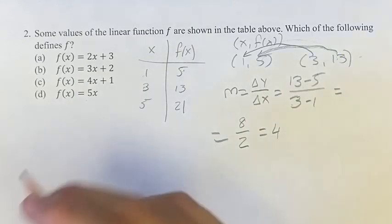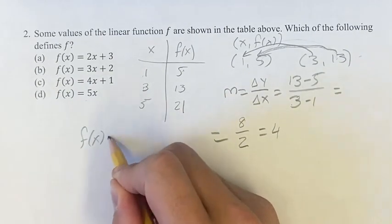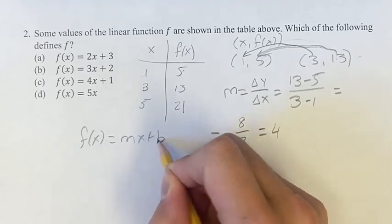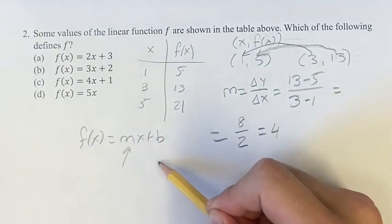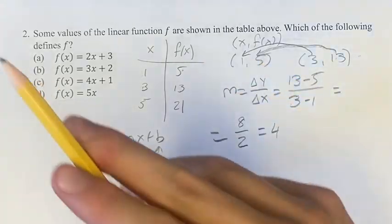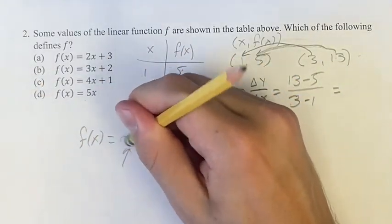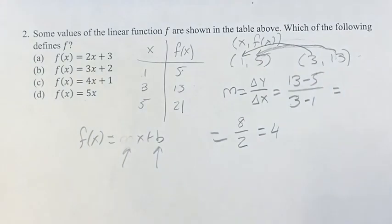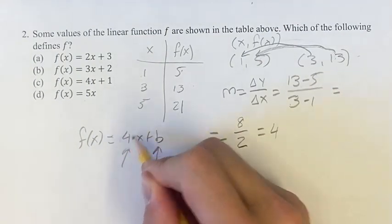So for the linear equation, f of x is equal to mx plus b, where m is your slope and b is your y-intercept. The slope being 4 is going to come in here, so we know that the equation of this line is f of x is equal to 4x plus b.